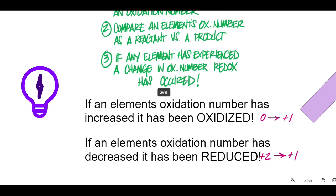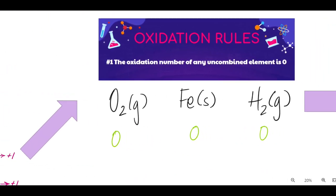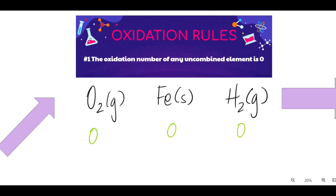Now remember, oxidation and reduction always occur together. Let's get back to those rules. The first one says the oxidation number of any uncombined element is zero. So anytime you have an element in a chemical equation that's by itself, not in a compound, like O2 or Fe, you can assume that its oxidation state is zero. And that basically just means that it has the same number of protons and electrons.